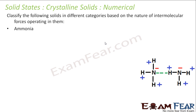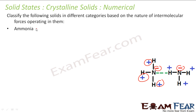Next is ammonia. In NH₃, nitrogen has a negative charge and all hydrogens have a positive charge. There is a hydrogen bond between nitrogen and hydrogen. So this is a hydrogen bond molecular solid.